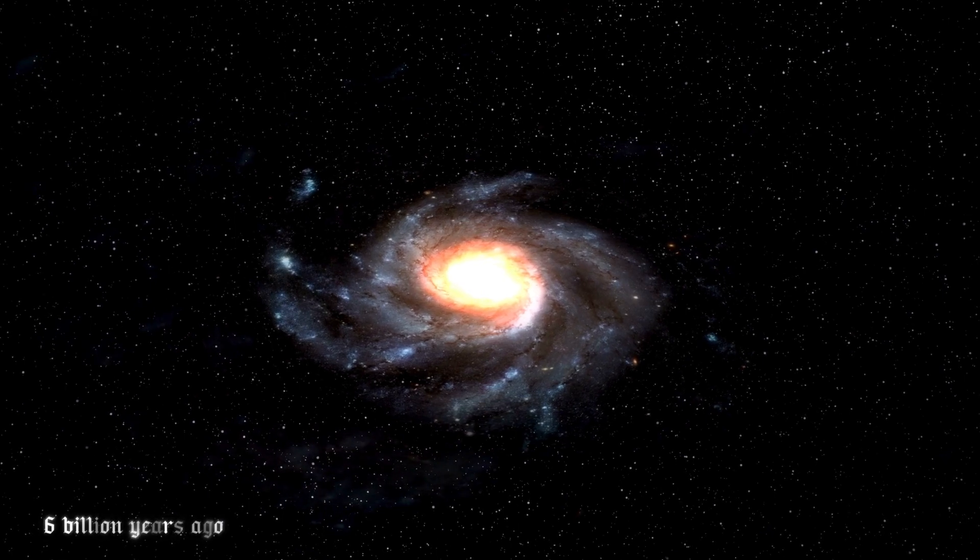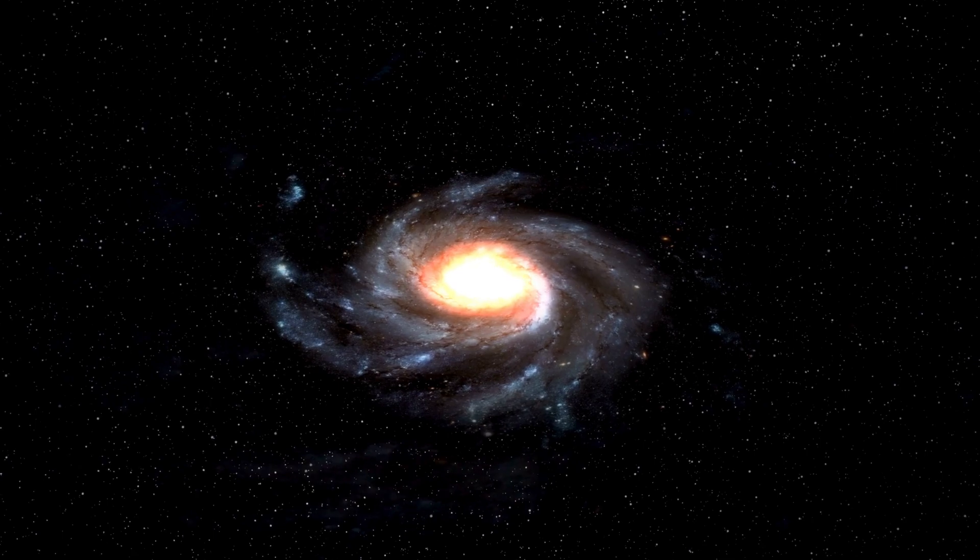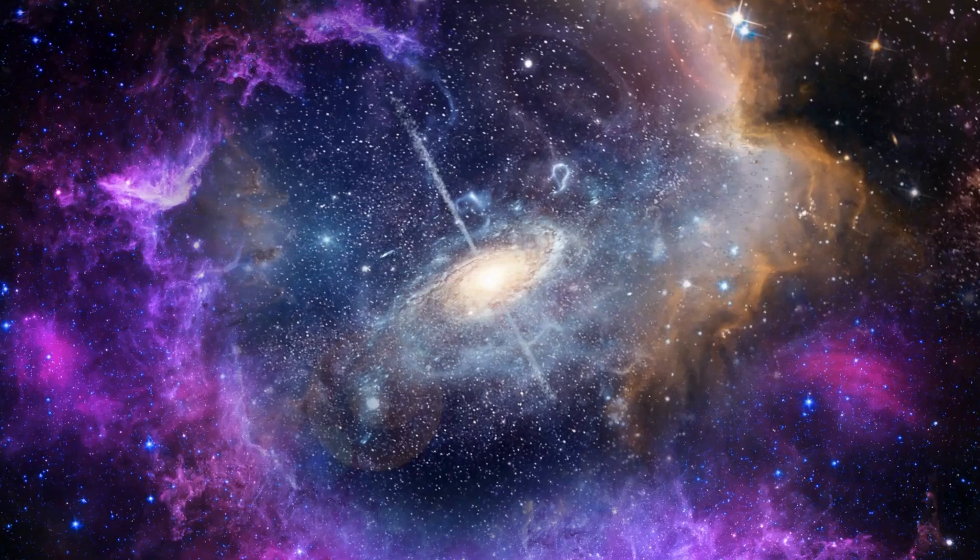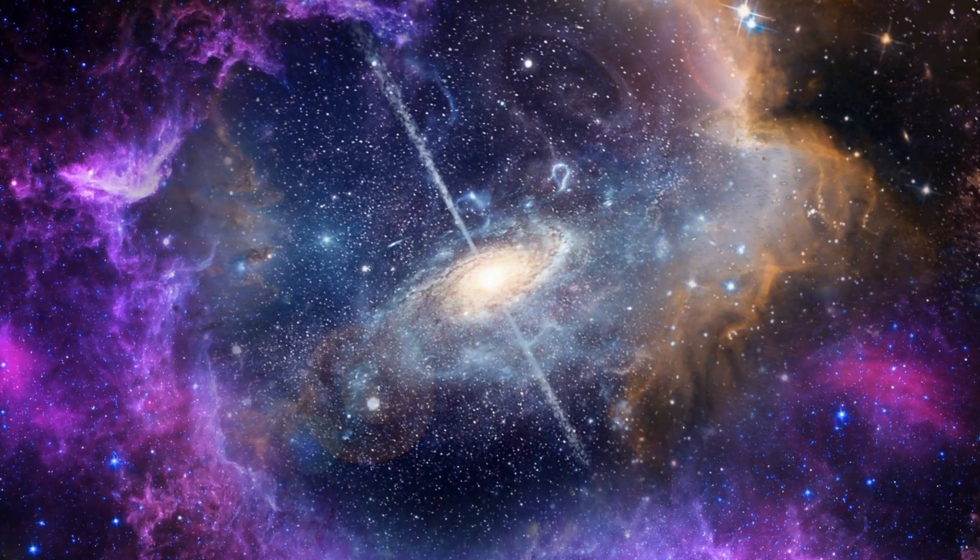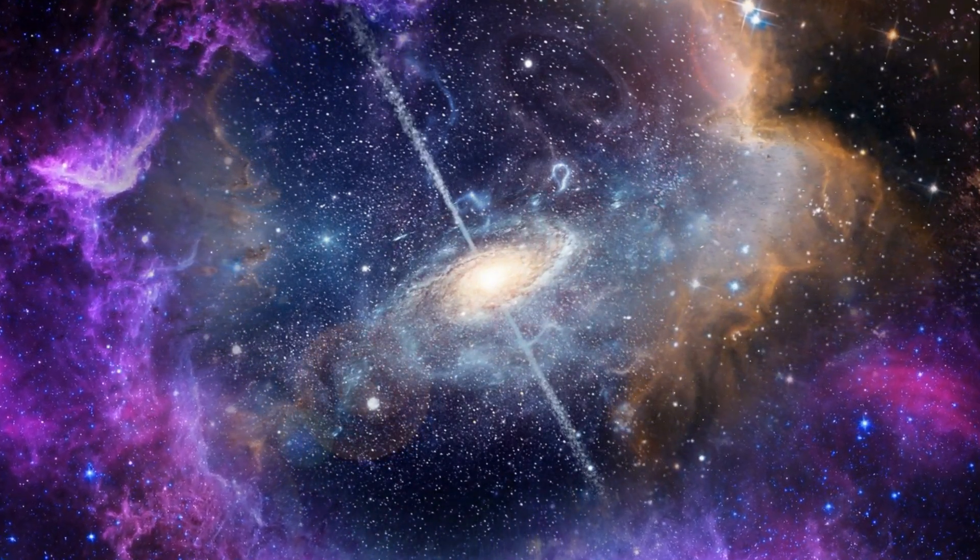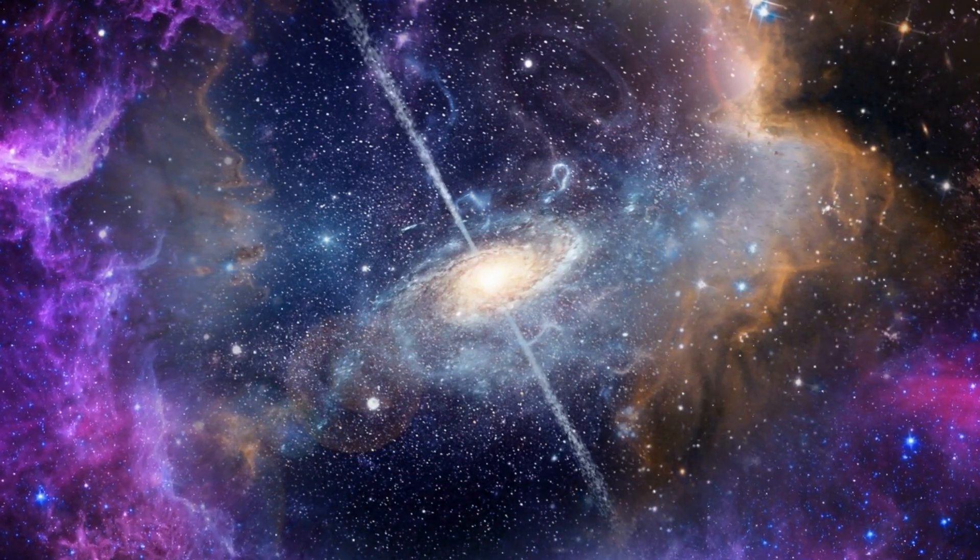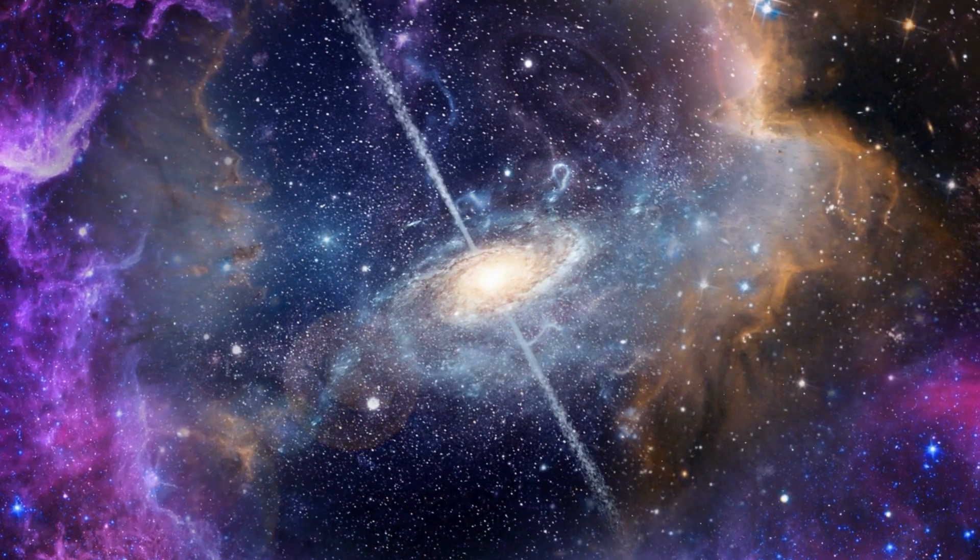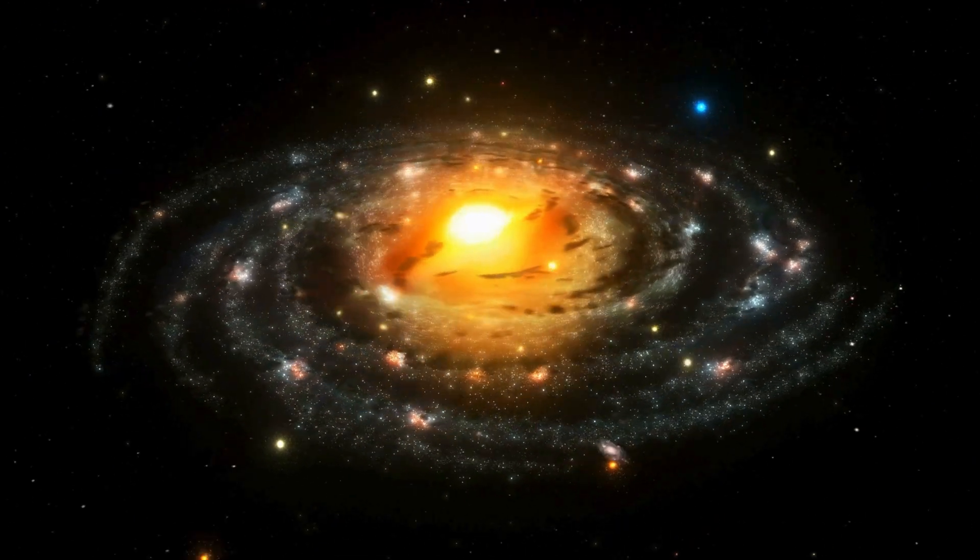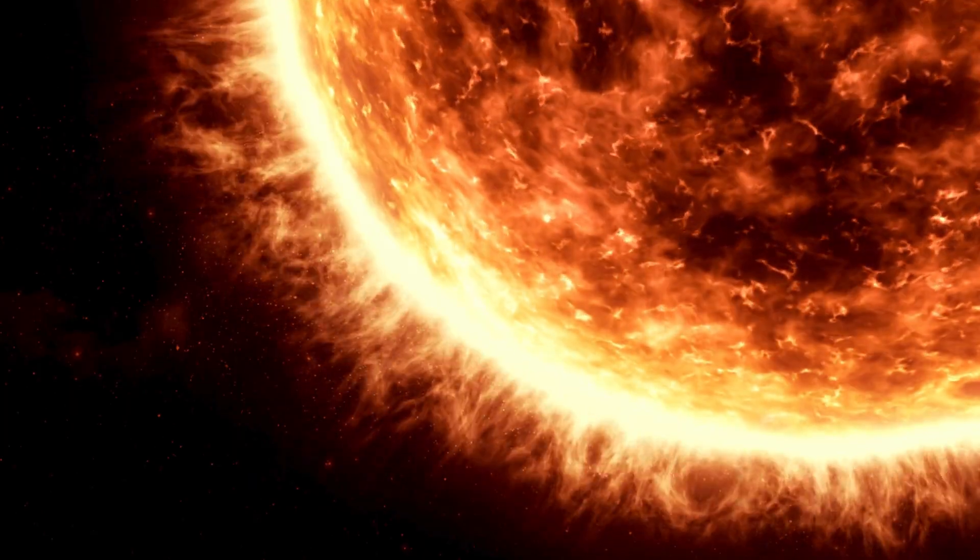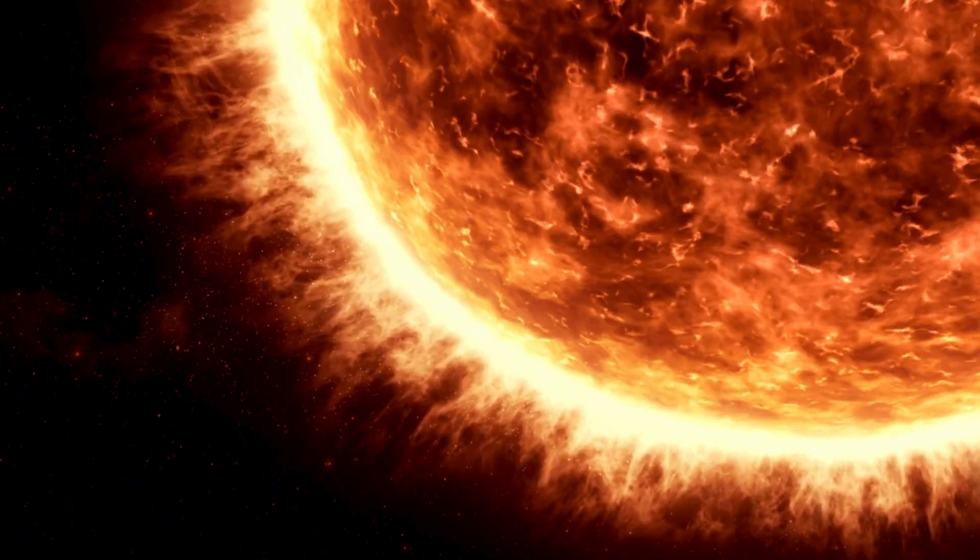Roughly 4.6 billion years ago, in one of the spiral arms of a galaxy known as the Milky Way, a massive cloud of gas and dust began to collapse. Triggered by a nearby supernova, the cloud's collapse gave birth to our solar system. At the center of this swirling cloud, most of the material was pulled together to form the sun—a star that would provide light and warmth to the planets around it. As the sun ignited and nuclear fusion began in its core, the leftover material began to clump together,